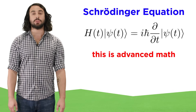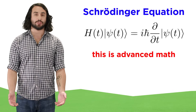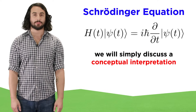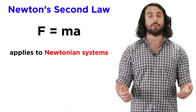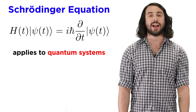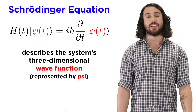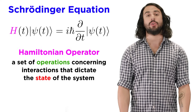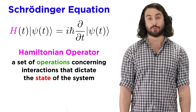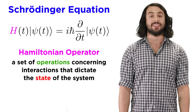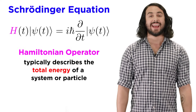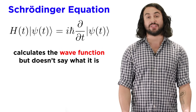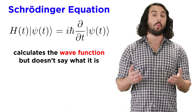This is a differential equation which utilizes concepts in mathematics that are beyond the scope of this series, but we can certainly discuss the conceptual implications of the equation. Essentially, just as F equals ma applies to Newtonian systems, the Schrödinger equation applies to quantum systems by describing the system's three-dimensional wave function, represented by the Greek letter psi. In this equation, this term is called the Hamiltonian operator, which is a set of mathematical operations that describes all the interactions affecting the state of the system, which can be interpreted as the total energy of a particle. But while the Schrödinger equation can calculate the wave function of a system, it does not specifically reveal what the wave function is.